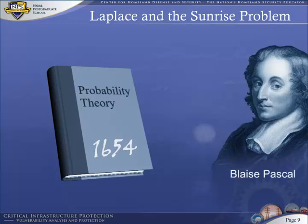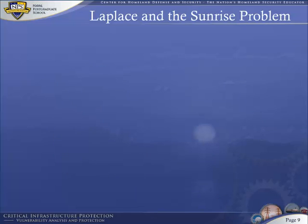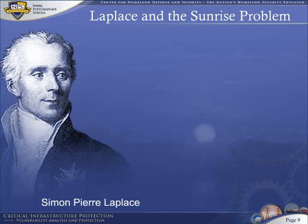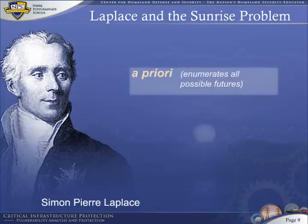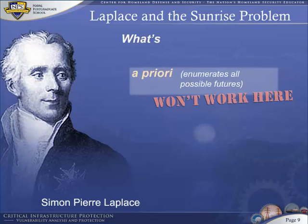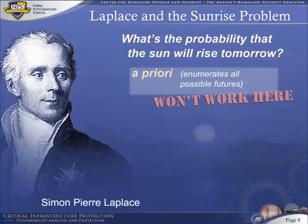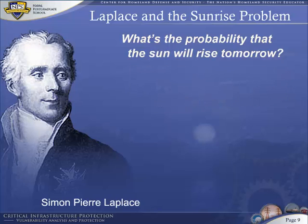Another hundred years passed before Pascal's definition of probability was challenged. Pierre Simon Laplace, a French mathematician, astronomer, and friend of Napoleon, came up with a different definition. Laplace ran into a problem that Pascal's a priori probability could not solve — the sunrise problem: what is the probability the sun will rise tomorrow? To answer this using Pascal's math would require enumerating the number of times the sun rises before it fails — we would have to predict the future to predict the future. Laplace reasoned that probability should be based on the past: we can estimate the likelihood of a future event, such as the sun rising tomorrow, by observing the past. Thus was born a posteriori probability.